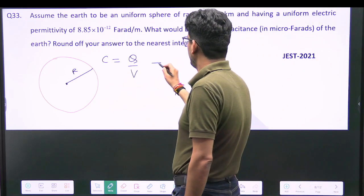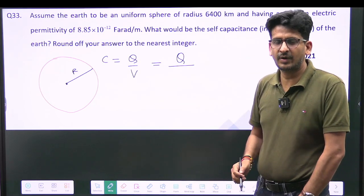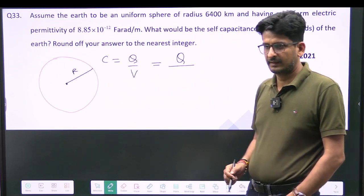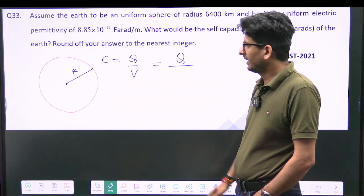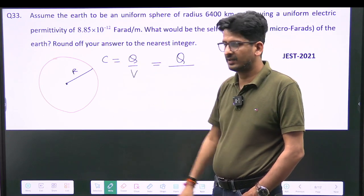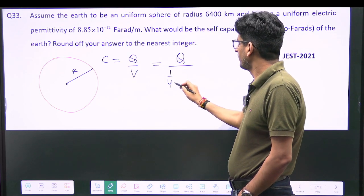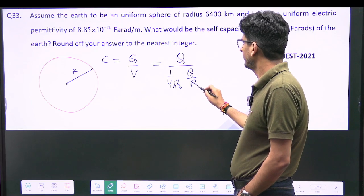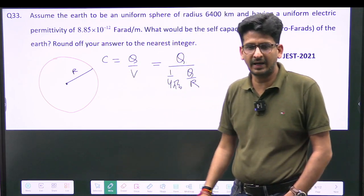This will become Q by, if Q charge is supposed to spread, what will be the potential? Potential at the center can be written and at the edge, suppose that is 0. So this will become 1 upon 4 pi epsilon 0 Q by R because all the charge you can consider it to be at the center.